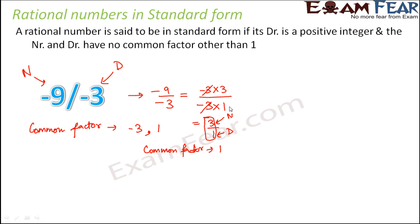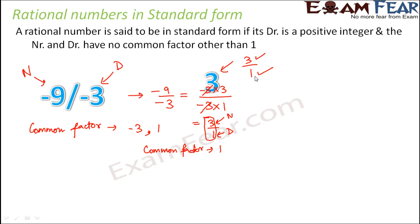Let us look at more examples. Take the number 3. Is 3 in its standard form? Yes, because 3 is nothing but 3 by 1. When you find their factors, the only factor they have in common is 1, so it is in its standard form.